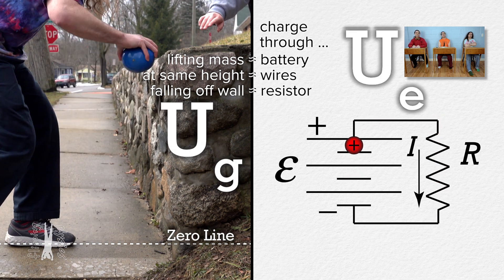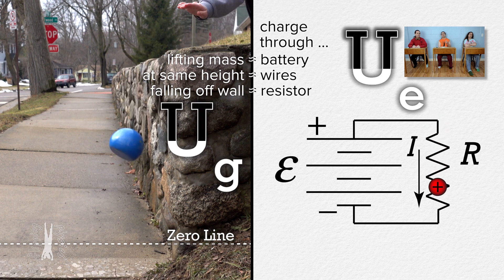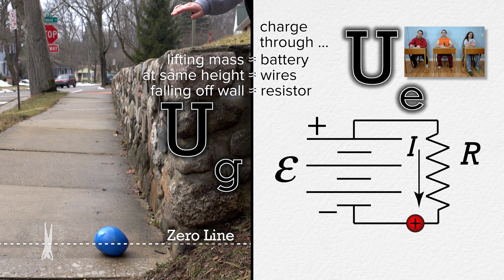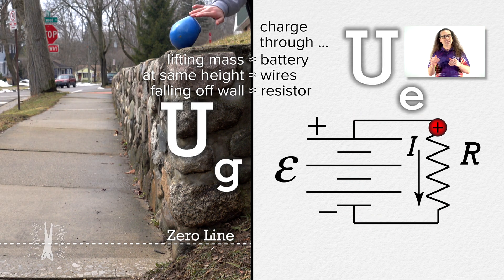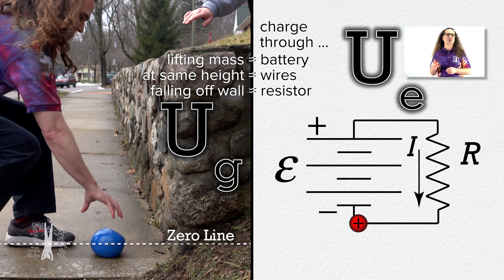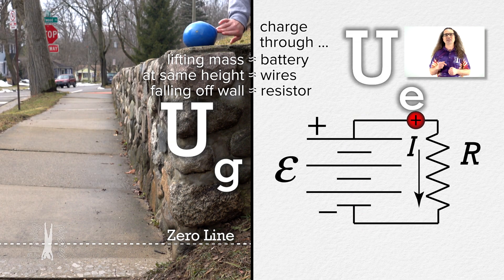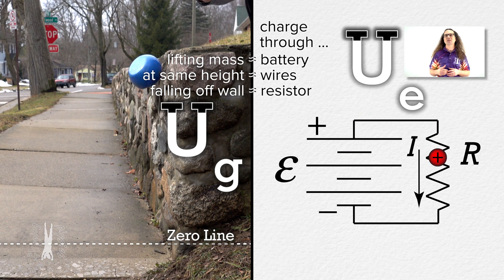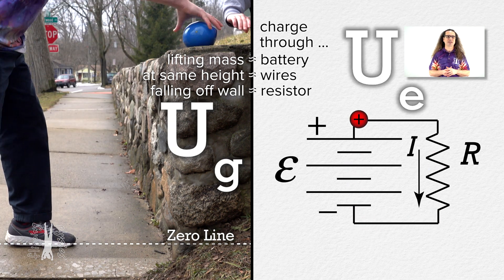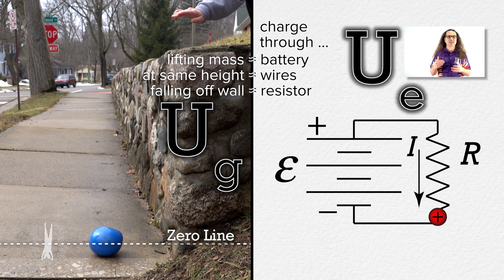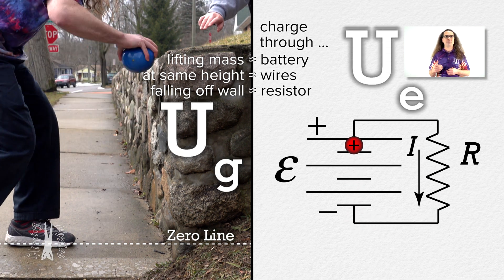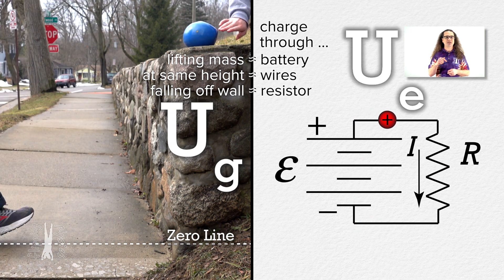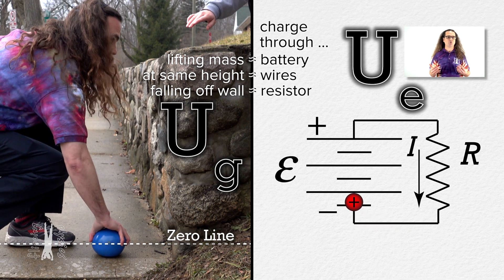But what about the resistance of the wires? We just derived the resistance of wires. Shouldn't the resistance of the wires affect what happens here? Right, sorry. Unless otherwise stated, all wires are considered to be ideal wires and have zero resistance. As charges move along a wire with zero resistance, the charge will experience zero change in electric potential energy. That is what is happening in the wires at the top and bottom of the circuit and is analogous to the mass at rest at a constant height at either the top or bottom of the wall.